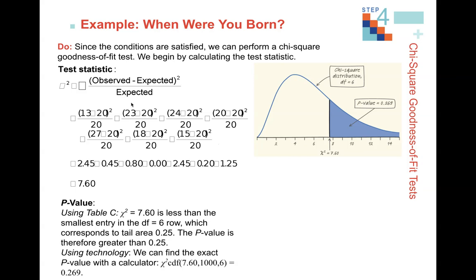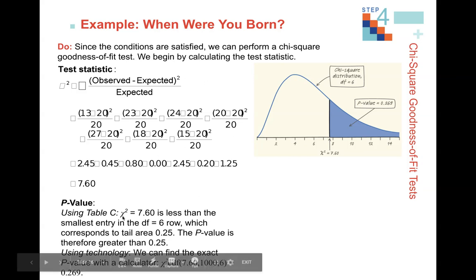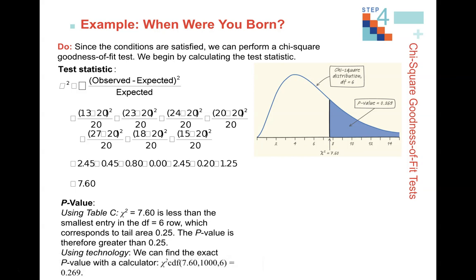For the Do step, write: chi-square = Σ (observed − expected)² / expected. Write this generalized statement first, then show the first component, dot dot dot, and the last component. You don't need to show intermediate steps — use technology to get the chi-square value. Also write your df. You must include df in the Do step. Then record your p-value using table D or technology — preferably chi-square CDF or stat tests goodness of fit.